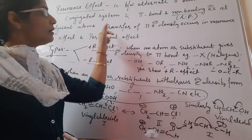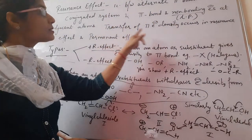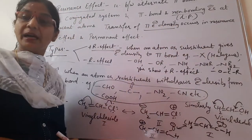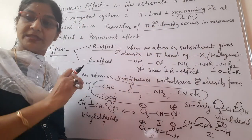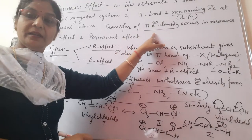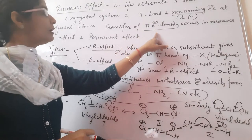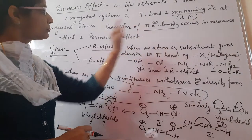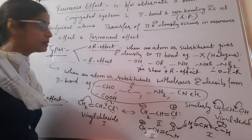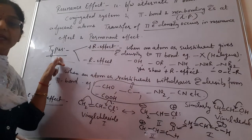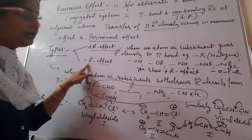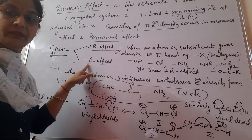In resonance effect, there is transfer of pi electron density, whereas in inductive effect there is transfer of sigma electron density. Resonance effect involves transfer of pi electron density and it is also a permanent effect. Resonance effect is of two types: plus R effect and minus R effect.